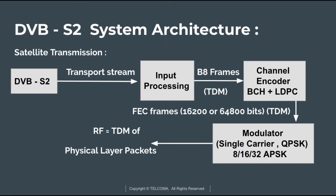This diagram shows the satellite transmission of DVB-S2. A DVB-S2 transmitter sends a transport stream into input processing. Through the input processing, a B8 frame comes out using a time division multiplexing technique to divide the signal. The signal then goes to the channel encoder, which consists of BCH plus LDPC codes.